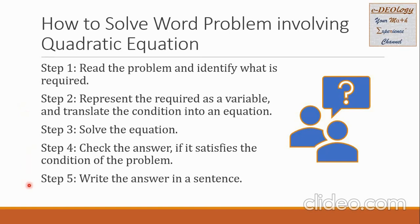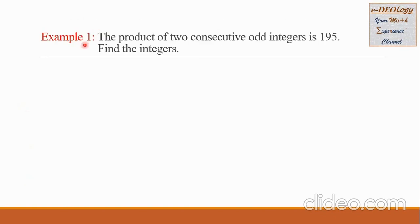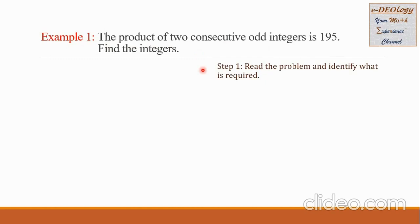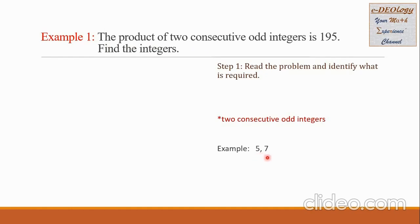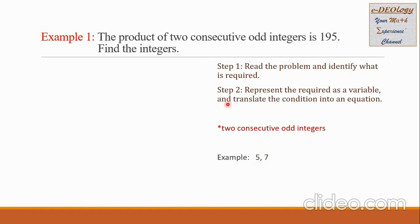Let us have Example 1. The product of two consecutive odd integers is 195 — find the integers. In Step 1, we read the problem and identify what is required. Here, the required is two consecutive odd integers. As an example of consecutive odd integers, we have 5 and 7 — both are odd integers and they are consecutive.